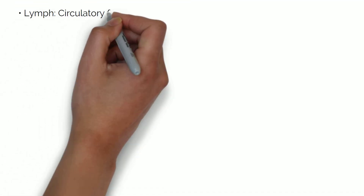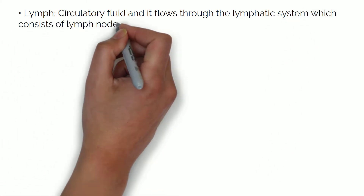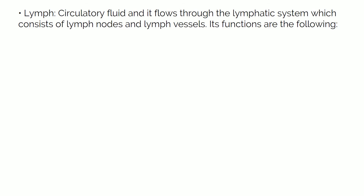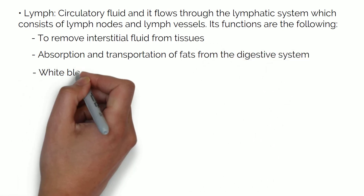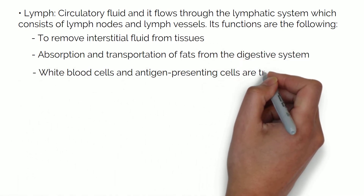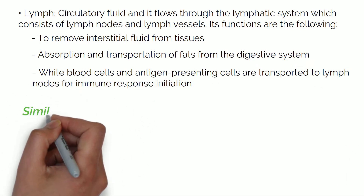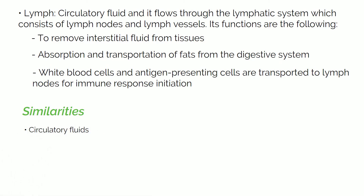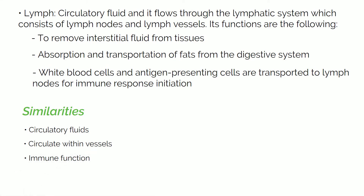Lymph is also a circulatory fluid and it flows through the lymphatic system, which consists of lymph nodes and lymph vessels. The function of lymph is to remove interstitial fluid from tissues, aid absorption and transportation of fats from the digestive system, and transport white blood cells and antigen-presenting cells to lymph nodes for immunity. The similarities between blood and lymph are that they are both circulatory fluids, they circulate within vessels, they have a role in immune function, and are joined by a system of capillaries.